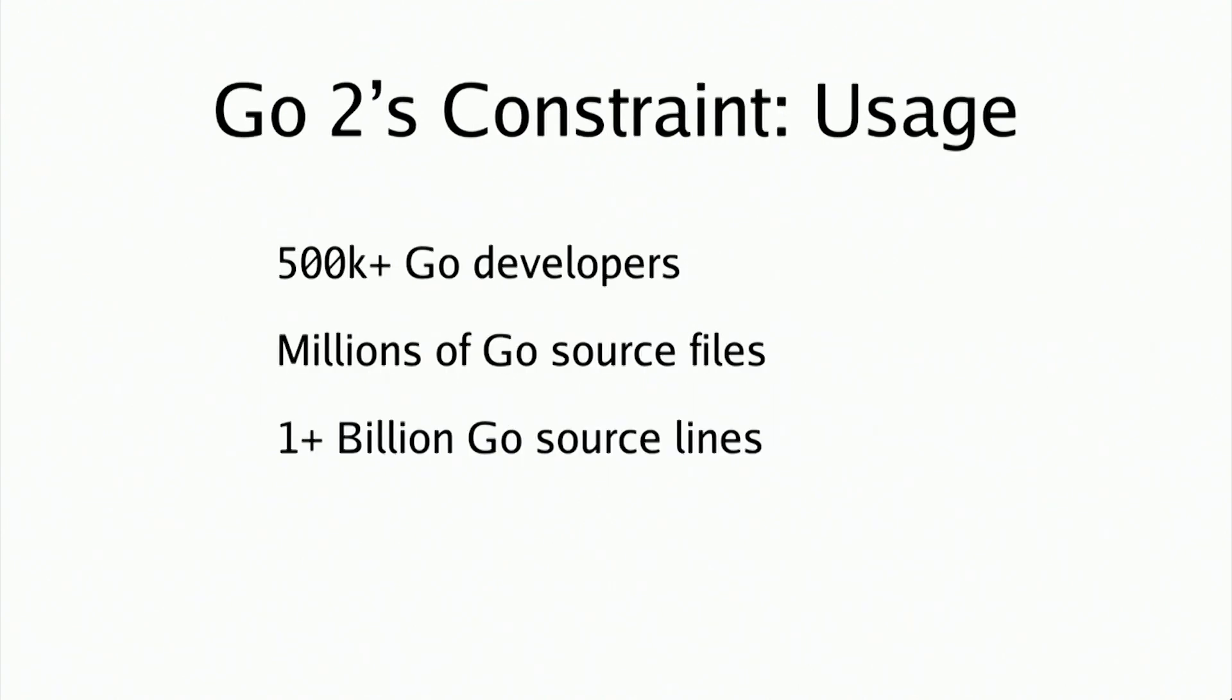The goals for Go have not changed since the beginning, but the constraints on Go certainly have. The most important constraint is existing Go usage. We estimate that there are at least half a million Go developers worldwide, which means there are millions of Go source files and at least a billion lines of Go code. These programmers and that source code represent Go's success, but they are also the main constraint on Go 2. Go 2 must bring along all those developers. We must ask them to unlearn old habits and learn new ones only when the reward is great.